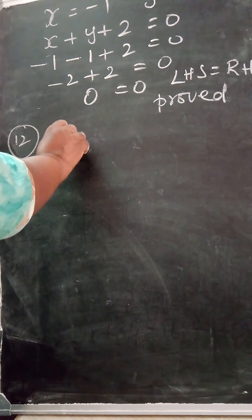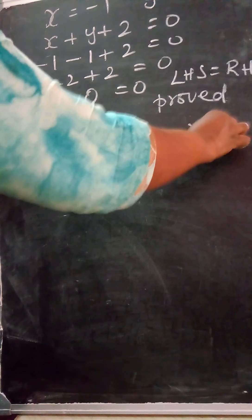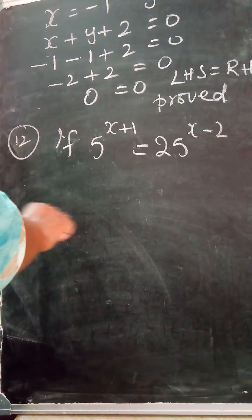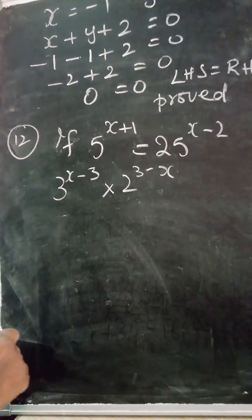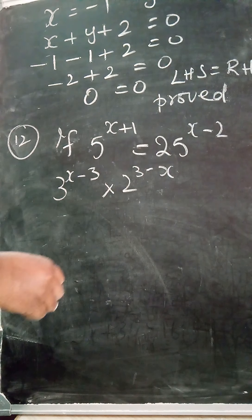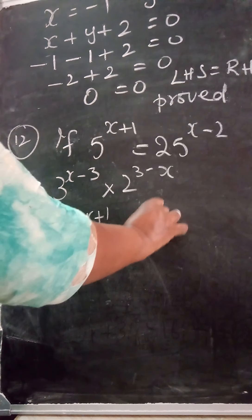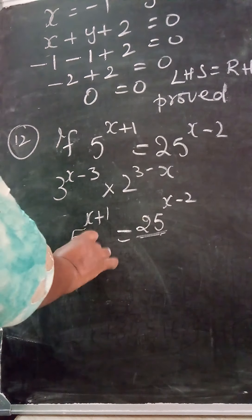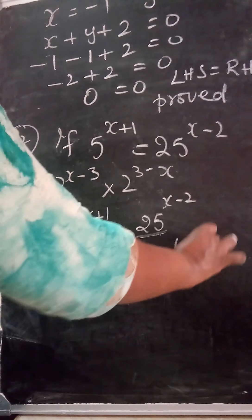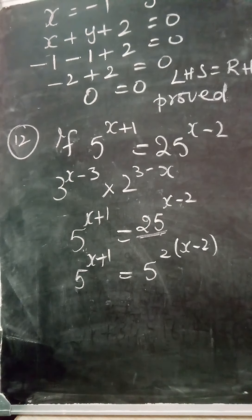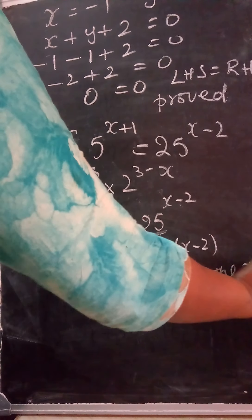Next: if 5 raised to the power of x+1 is equal to 25 raised to the power of x-2, find the value of x and then substitute in 3^(x-3) × 2^(3-x). Taking 5^(x+1) = 25^(x-2): since 25 = 5², we write the right side as (5²)^(x-2) = 5^(2(x-2)). Now bases are the same, so equate the powers.